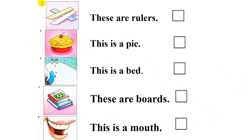You do the same with number 1, 2, 3, 4, 5. These are rulers. This is a pie. This is a bed. These are balls. This is a mouse. Now can you look at this picture and put a tick or cross in the box? Yes. Now next one.